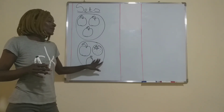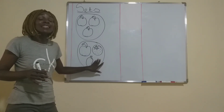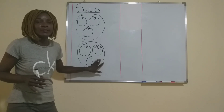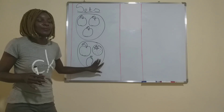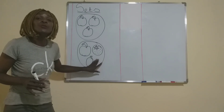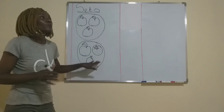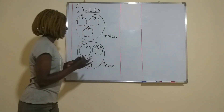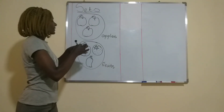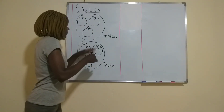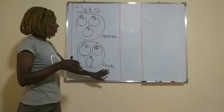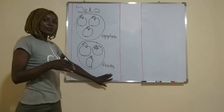So we are saying this is a set of fruits. A set of fruits. So a set of apples, a set of fruits.